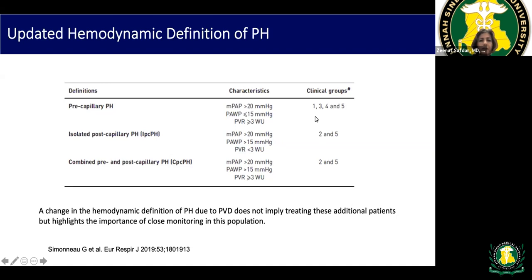Post-capillary pulmonary hypertension, associated with left heart disease, uses the same mean PA pressure threshold of greater than 20 mmHg, but the wedge pressure or LV EDP is more than 15 mmHg and PVR is less than three. Many patients fall into the combined pre- and post-capillary category, presenting both a diagnostic and treatment challenge.